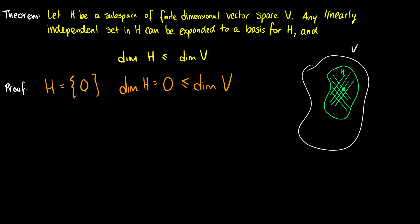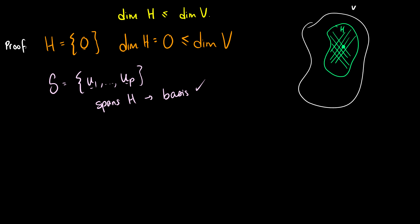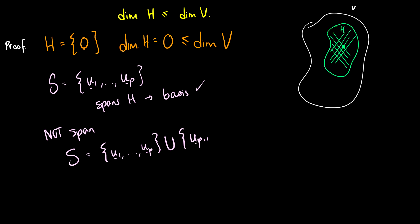Now let's consider that we have a set of vectors S, which is u1 all the way up to u_p. If this spans all of H, then we have a basis. But if it doesn't span H — and remembering this set is linearly independent — what we can do is take our vectors u1 through u_p and add another vector u_{p+1}, which is also linearly independent, so we can expand it.